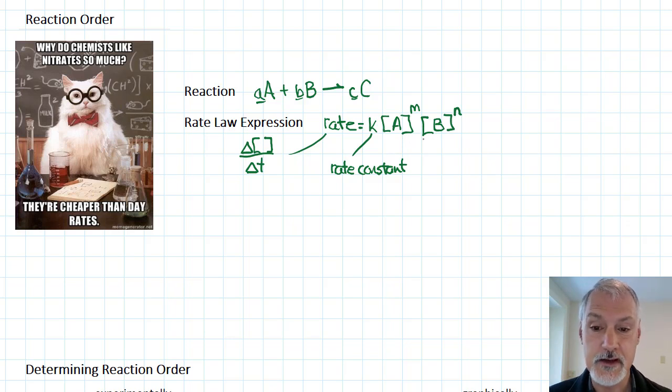A and B refer to their concentrations, and these M and N values up here, these are experimentally determined exponents. Let's look at what these exponents could possibly be.